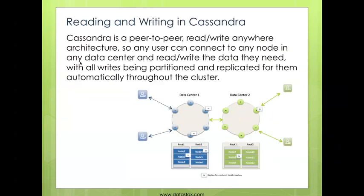The first thing you need to understand is Cassandra is a peer-to-peer architecture. It's not a master-slave architecture or anything similar, and this means it's a read-write-anywhere design. You can connect to any node in your database cluster, read and write data to and from that node, and Cassandra automatically takes care of partitioning and replicating that data across all the nodes in your cluster, even if your database spans multiple data centers.